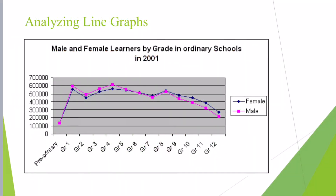In this slide, we can see the line graphs showing male and female learners by grades in ordinary schools in the year 2001. The blue line shows the females, while the pink line graph shows the males. We have two line graphs to compare and contrast. Both the female and male numbers have the same variations — they are both increasing from pre-primary into grade 1, then decrease from grade 1 into grade 2. Then there is a dramatic increase until grade 8, followed by a slight decrease up to grade 12.